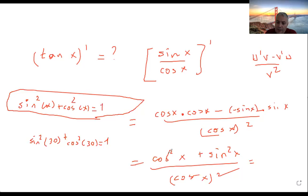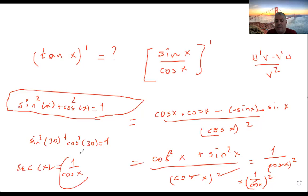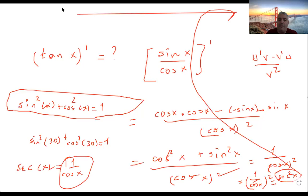So cosine squared x plus sine squared x equals 1, giving us 1 over cosine squared x. This can be written as 1 over cosine x, all squared. And since secant of x is defined as 1 over cosine of x, we get secant squared x. So the result is secant squared x.